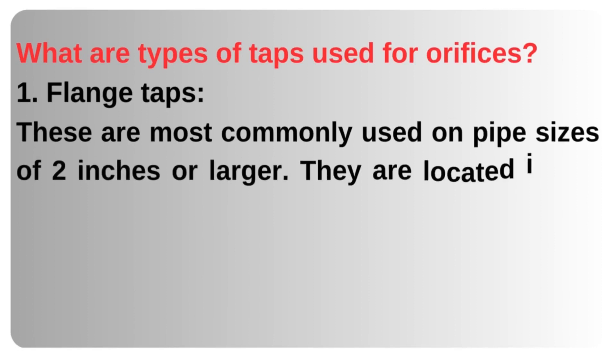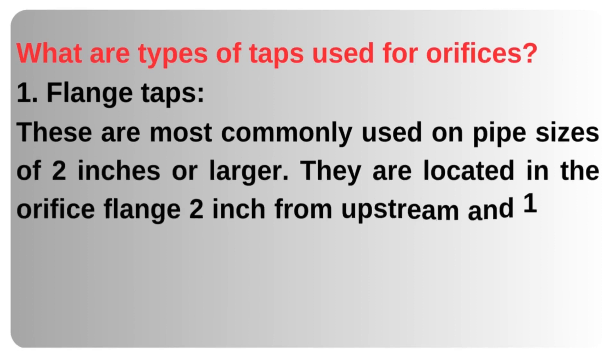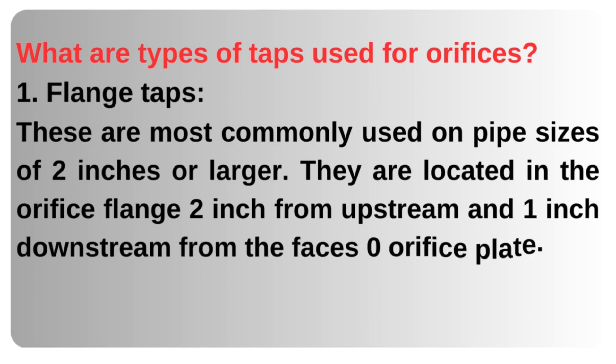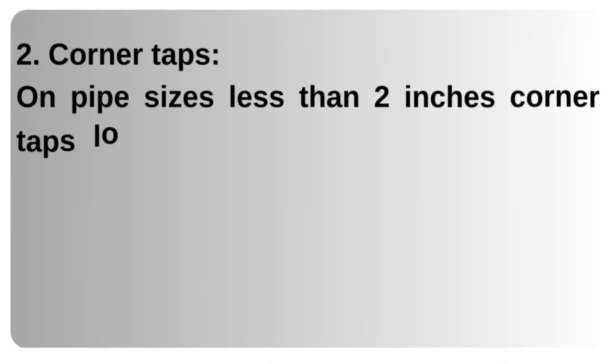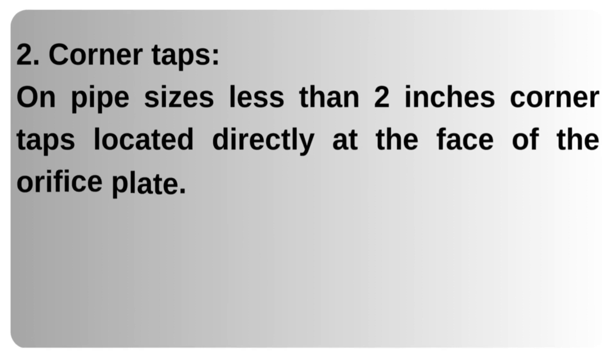What are the types of taps used for orifices? 1. Flange taps — these are most commonly used on pipe sizes of 2 inches or larger. They are located in the orifice flange, 2 inches upstream and 1 inch downstream from the face of the orifice plate. 2. Corner taps — on pipe sizes less than 2 inches, corner taps are located directly at the face of the orifice plate.